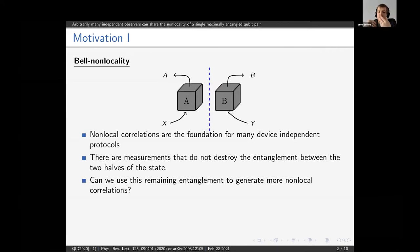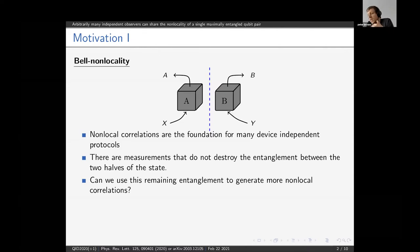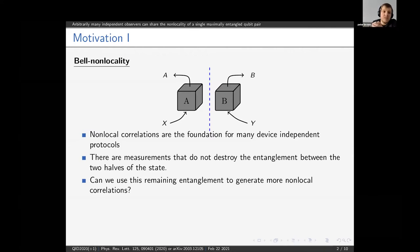The question is: can we use this remaining entanglement in some useful way, for example to generate extra non-local correlations? Maybe this would make implementations of device-independent protocols more efficient in terms of the number of entangled states that we have to distribute.